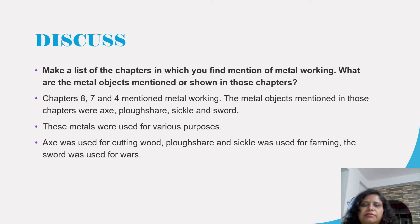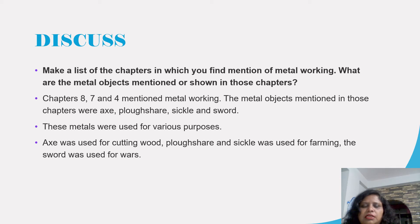Discuss: Make a list of the chapters in which you find metal objects mentioned — chapters 7, 8, and 4 of NCERT Class 6 history, which has 11 chapters. The metal objects mentioned in those chapters are axe, plowshare, sickle, and sword. These metals were used for various purposes: the axe for cutting wood, the plowshare and sickle for farming, and the sword for warfare.